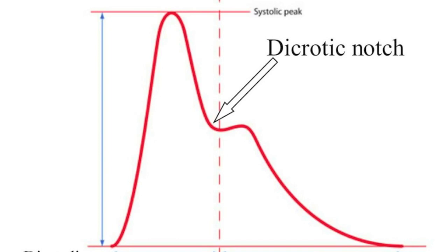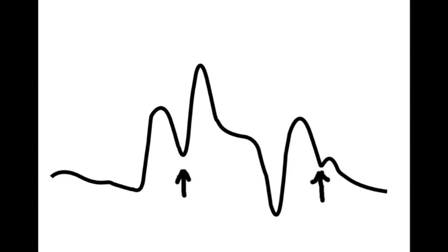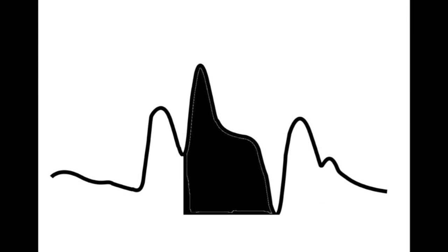These diagrams depict a normal arterial pressure waveform and an augmented waveform produced by the intra-aortic balloon pump. The first peak corresponds to the patient's peak systolic blood pressure — the unassisted systole. The second, higher peak is generated by the inflation of the balloon at the beginning of diastole, once the aortic valve has closed, an event identified by the dicrotic notch on the unassisted trace. The pressure in the proximal aorta rises, known as diastolic augmentation, supporting coronary and cerebral blood flow.